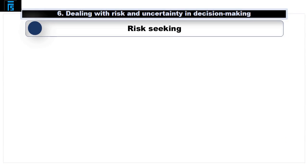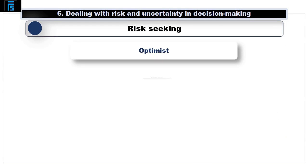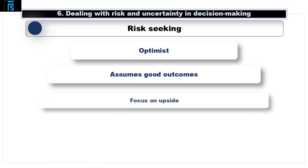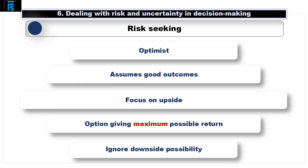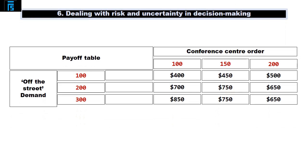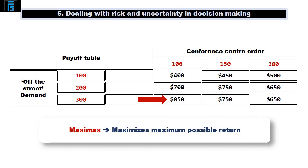If Jack is risk seeking, he is by nature more of an optimist. He assumes good outcomes will follow from his decisions and therefore focuses on the upside potential, choosing the option that gives him the maximum possible return and ignoring the downside. Looking at the table, the biggest possible contribution occurs when he signs up to supply 100 sandwiches to the conference centre and off-the-street demand is 300, earning a contribution of $850. This decision criteria is known as Maximax — it maximises the maximum possible outcome. Jack is conveniently ignoring the fact that if off-the-street demand is low, he will only earn $400, the worst possible return.